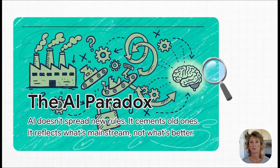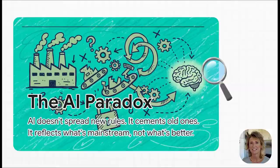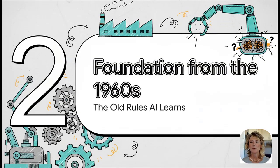Okay, so if AI is just reinforcing these old rules, that begs the question, what exactly are these old rules? And where do they even come from? Well, for that, we've got to jump in a time machine and head back a few decades.